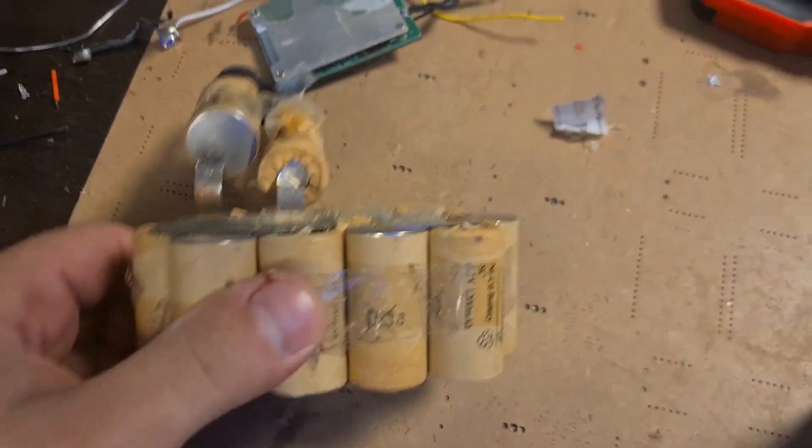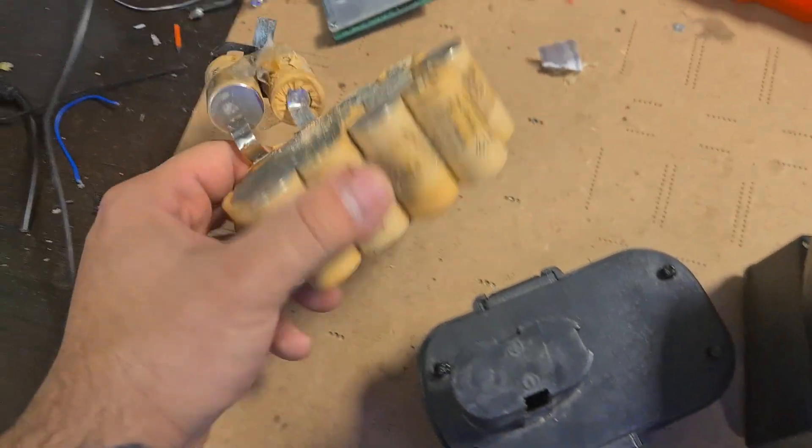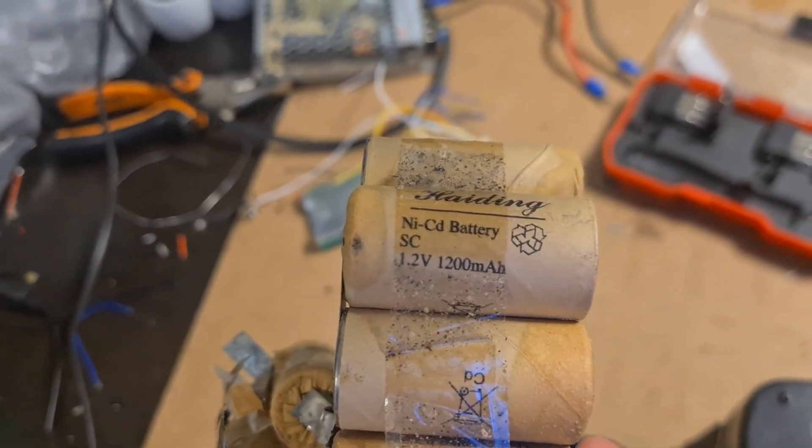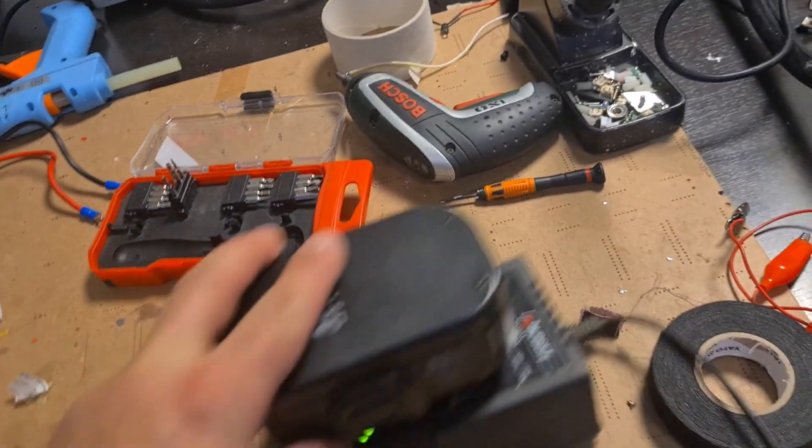Hey guys, welcome to a short video. I want to show you how to repair a battery for a hand drill. This is the battery that I disassembled. It's an old battery that uses 1.2 volt cells, and I'm going to turn it into a lithium-ion battery.